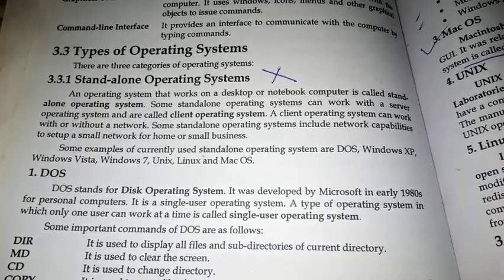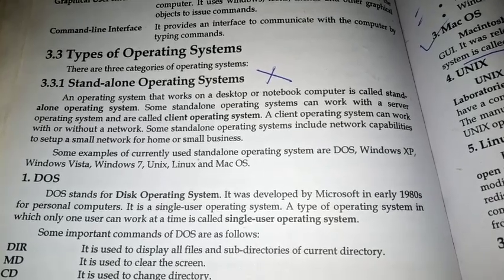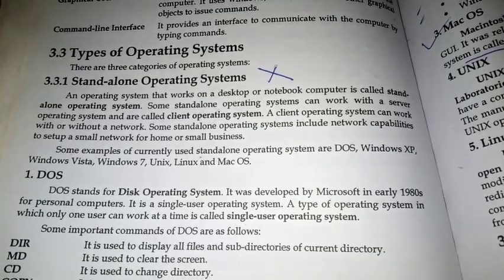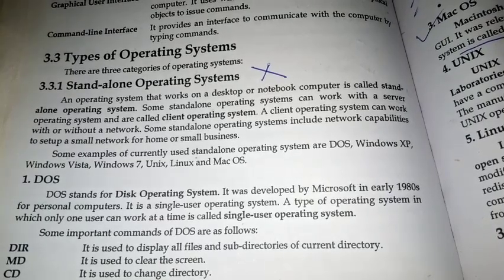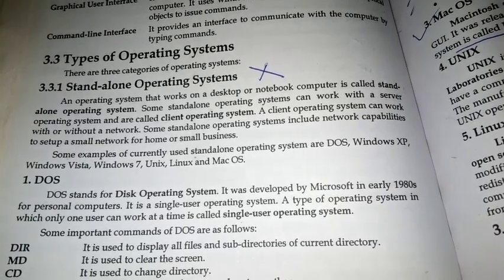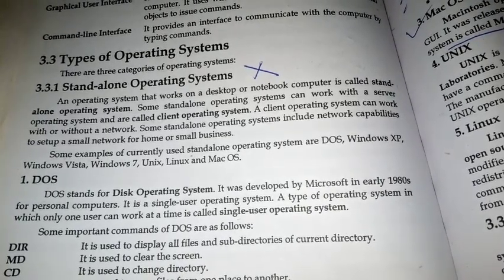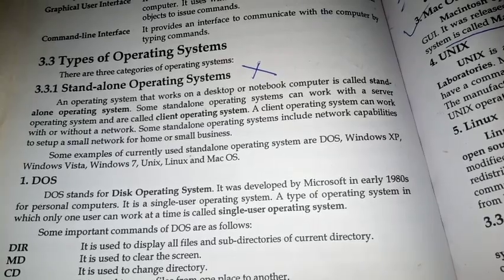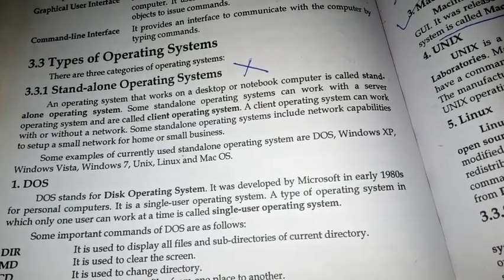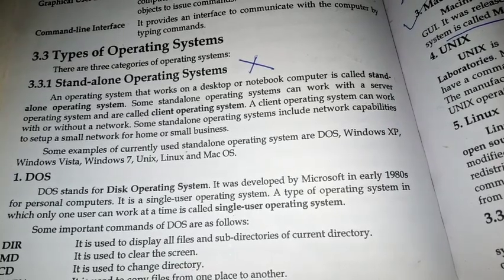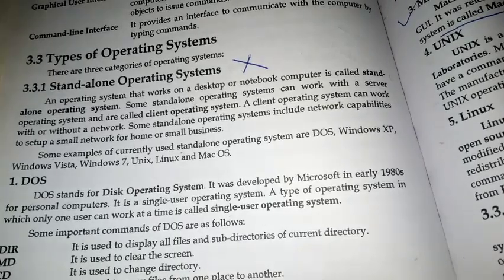Welcome everyone. Now we are talking about types of operating systems. The first one is the standalone operating system. An operating system that works on a desktop or notebook is known as a standalone operating system. Some standalone operating systems can work with a server operating system and are called client operating systems. A client operating system can work with or without a network.